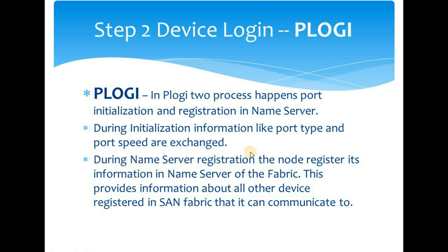The second process in PLOGI is nameserver registration. Each fabric has a nameserver, and all devices connected to the fabric are registered there. Once a new device completes FLOGI, it sends its information to the fabric, which registers it in the nameserver. You can view nameserver information using the NSSHOW command in Brocade or the SHOW FCNS DATABASE command in Cisco.